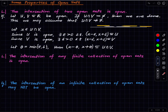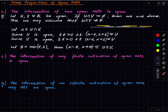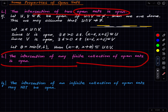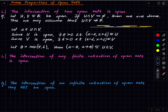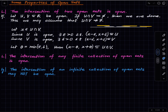The next property is a consequence of the previous one: the intersection of any finite collection of open sets is open. Since we proved it for two open sets, it follows by induction for any finite collection. However, the intersection of an infinite collection of open sets may not be open.